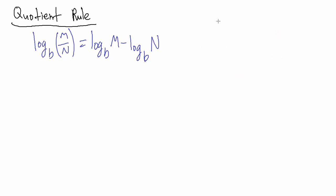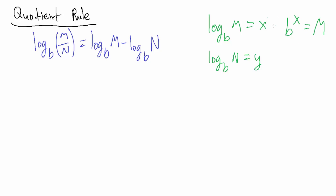We're going to proceed just like we did before. Let's look at log_B(M) and log_B(N) separately. Let's call log_B(M) = X and log_B(N) = Y. The reason we do this is so we can convert these into exponential equations: if log_B(M) = X, that's the same as B^X = M. And if log_B(N) = Y, that's the same as B^Y = N.